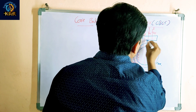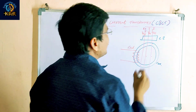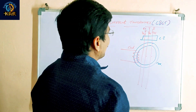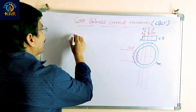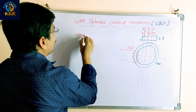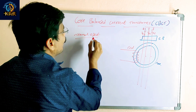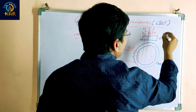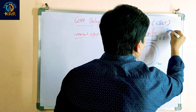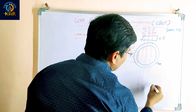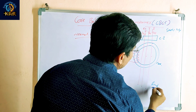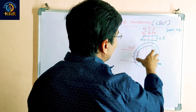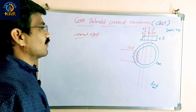In this circuit, one circuit breaker is available. Now we go for the normal operation. This is the source side and this is the load side. The current is passing from source to load, and in between the CBCT is available.